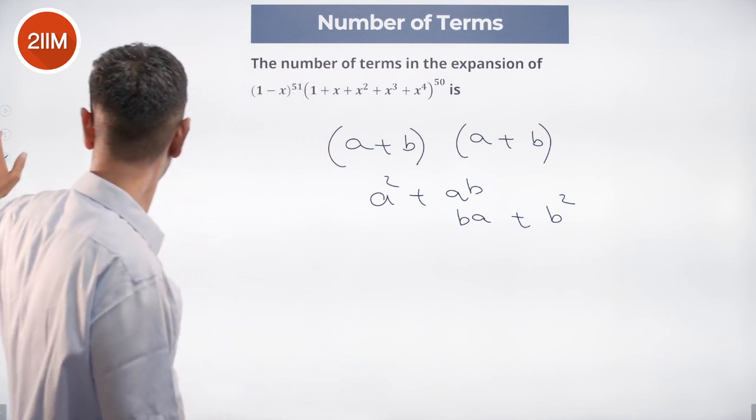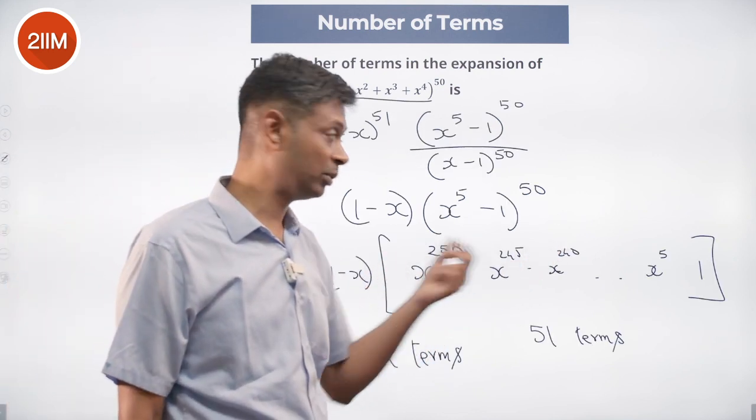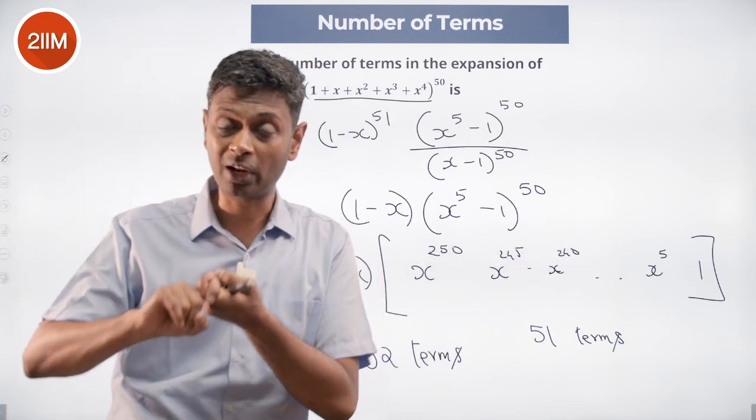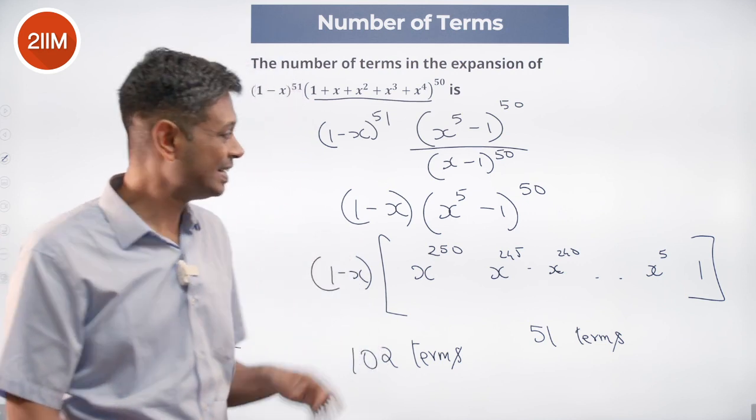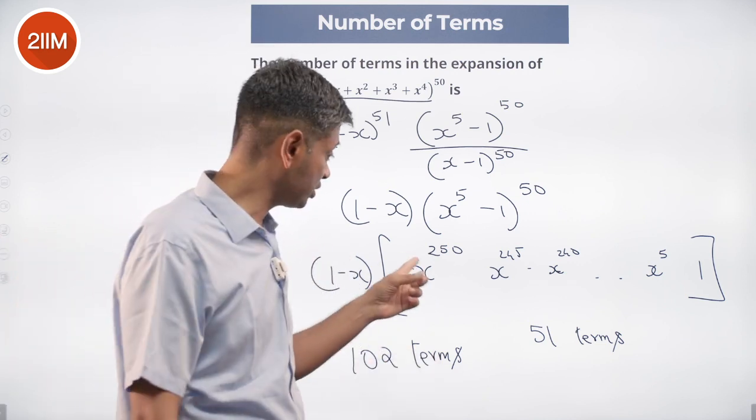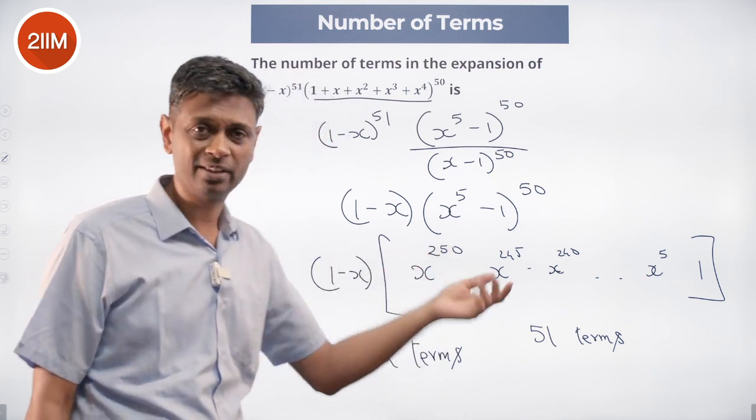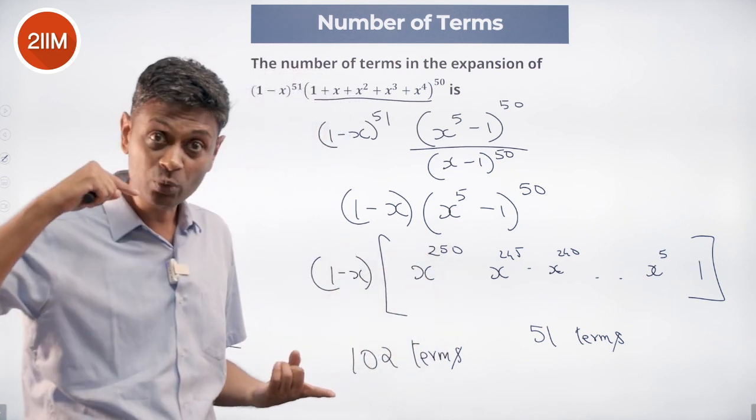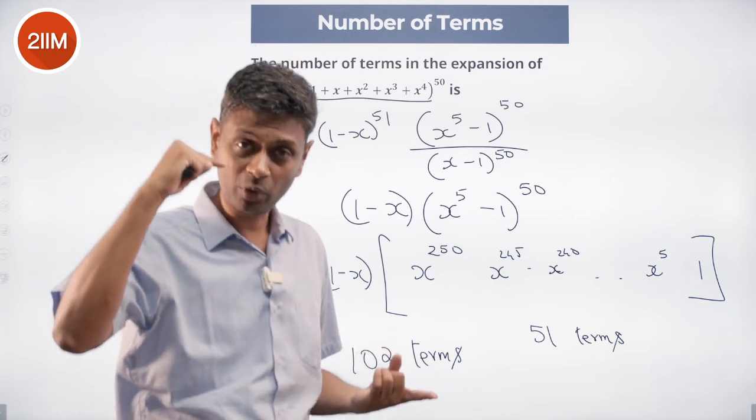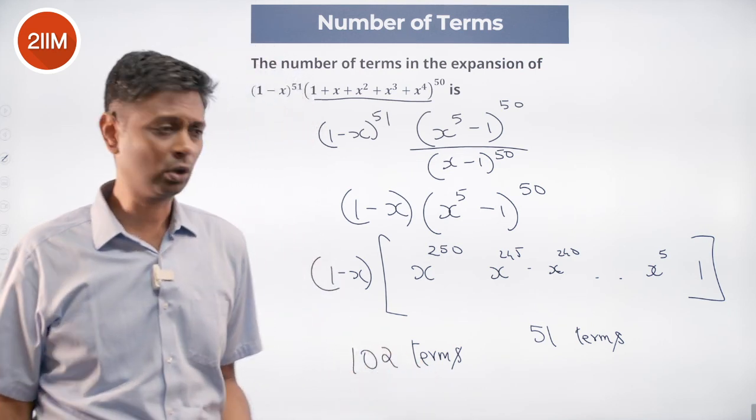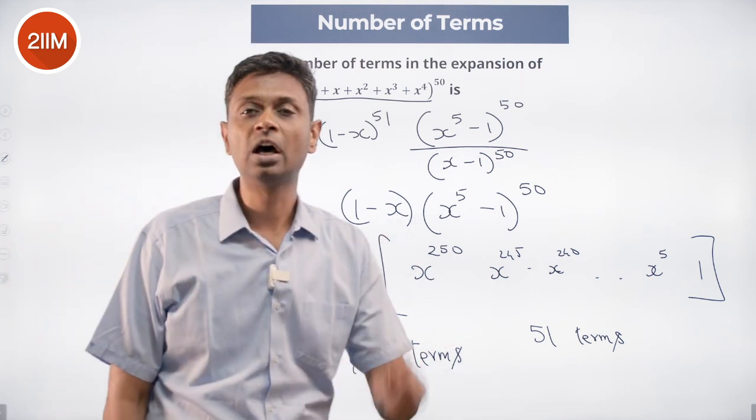In this case, we cannot just look at this and say 51 into 2 is 102. There could be overlap. Having said that, in this case, there is no overlap because these are all steps of 5. Multiplying by 1, it will all stay as it is. Multiplying by x, each one will become steps of 5 plus 1, multiple of 5 plus 1. No overlap at all. So 51 terms plus 51 terms, 102 terms are there. Beautiful question.